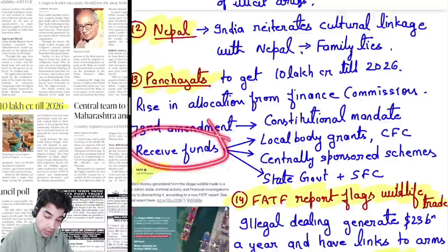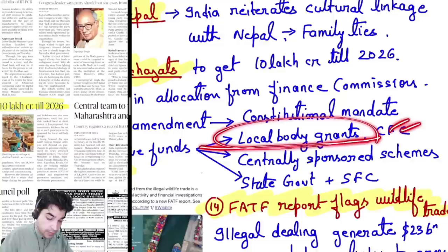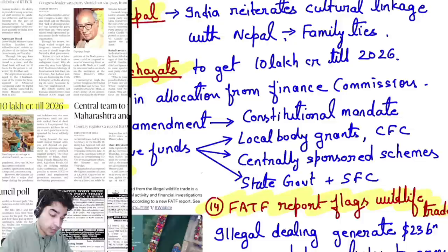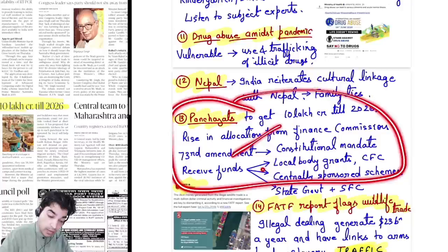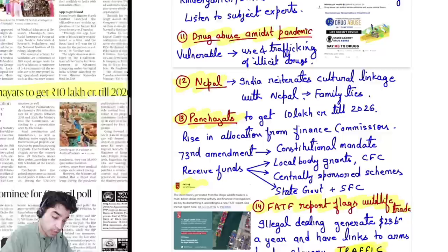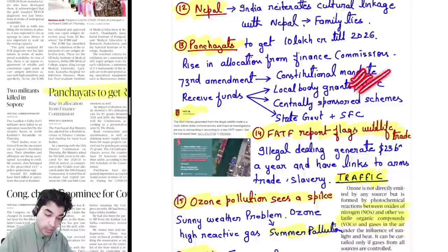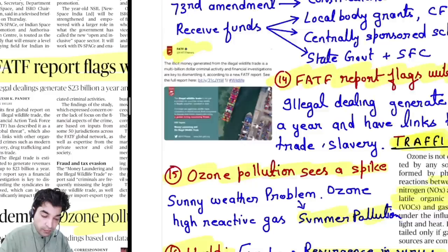Under the 73rd Amendment, panchayats receive funds through three routes: first, through the Central Finance Commission, which gives local body grants — currently the 15th Finance Commission; second, through Centrally Sponsored Schemes for different scheme implementations; and the State Finance Commission also allocates funds, plus some panchayats have been given taxation rights. This way, panchayats receive money to do different work at the local gram sabha level. The news here is that panchayats are to receive ₹10 lakh crore in allocation from the Finance Commission route.